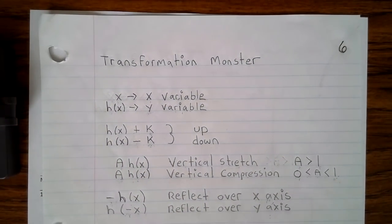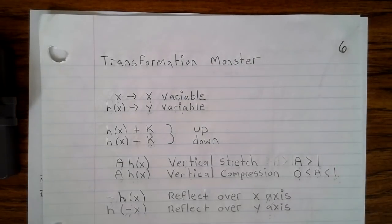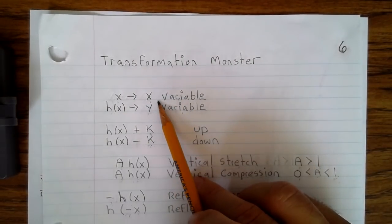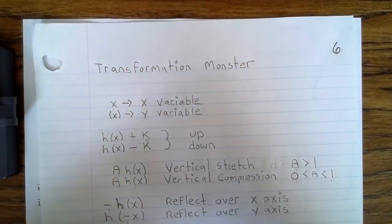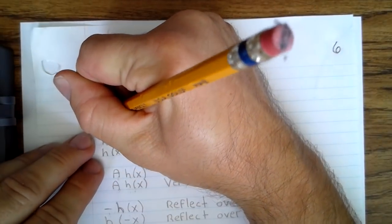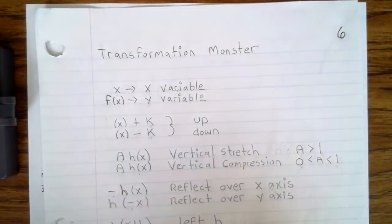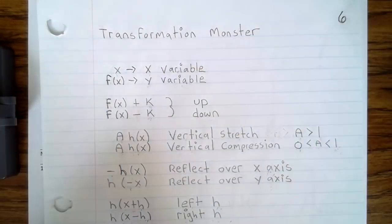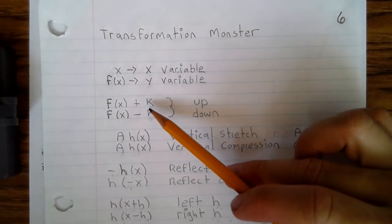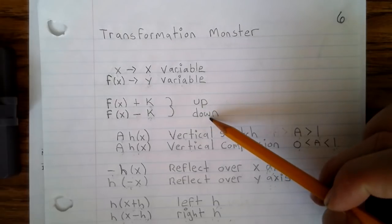So you have Transformation Monster on page 6. F(x) is the x variable, and I used h in my notes, but to correspond better with today, I'm going to use f(x). So f(x) equals y. It's not wrong with h(x), but that's what it corresponds to. So f(x) + k or f(x). Now f(x) + k is up. f(x) - k is down.